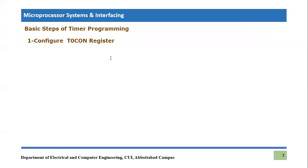The very first step involved in timer programming is configuration of the Timer Zero Control Register. We have already learned what the Timer Zero Control Register is and how it controls the basic operation of Timer Zero. The very first step we are going to perform in timer programming is to load the specific value according to the requirement of the Timer Zero Control Register.